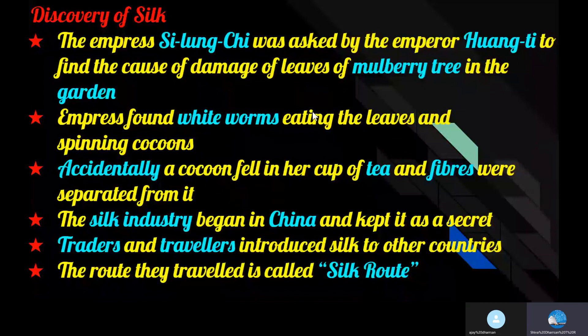Silk industry began in China and was kept a closely guarded secret for hundreds of years. Later, traders and travelers introduced silk to other countries, and the road they traveled is still called the Silk Route.